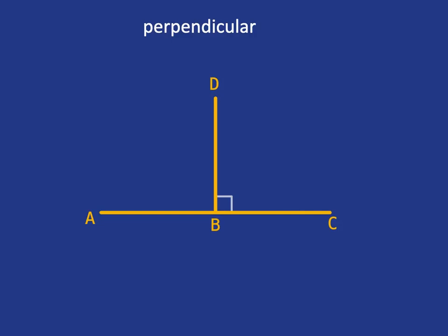So let's start by looking at lines that are perpendicular. What does it mean for lines to be perpendicular? Lines are perpendicular when they cross at 90 degrees.